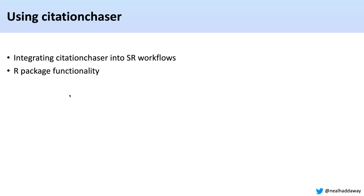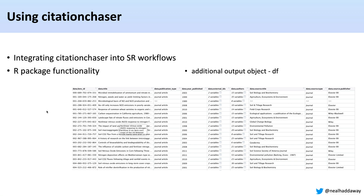Another advantage is the functionality in R. What you see in Citation Chaser is just RIS files, but if you do the same thing in R you'll be able to access a much richer data frame. It's a nested data frame that comes from a JSON file, so you have external IDs, authors, and author information like affiliations — much richer in that file. So if you want all of that information you can use the R package.